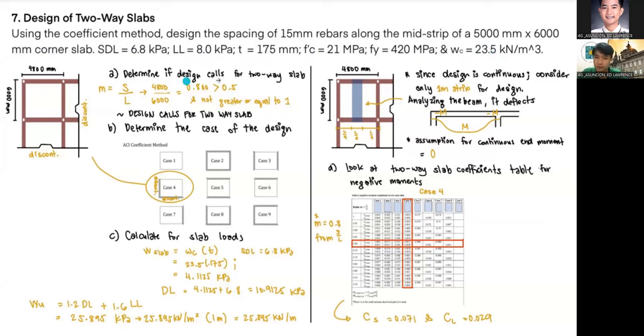Our first step is to determine if the design calls for a two-way slab. Using the formula, short span over long span will be acquiring the value 0.800, which is greater than 0.5 and not greater than or equal to 1, which denotes that the design calls for a two-way slab.